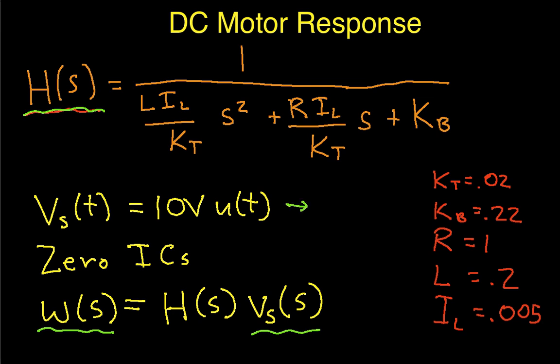So we take the Laplace transform of this guy. The Laplace transform of the unit step function is 1 over S, and it's multiplied by a constant of 10, so that gives us 10 over S. So basically now, to get Omega of S, we're going to take H and multiply it by V sub S. So we're just going to have this whole thing up here multiplied by 10 over S.